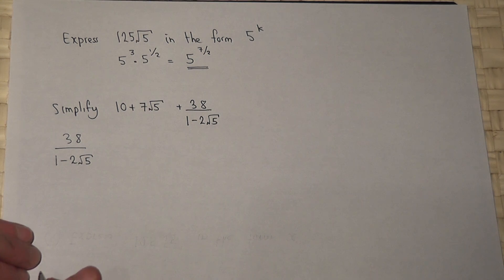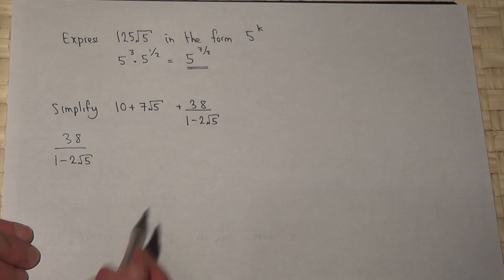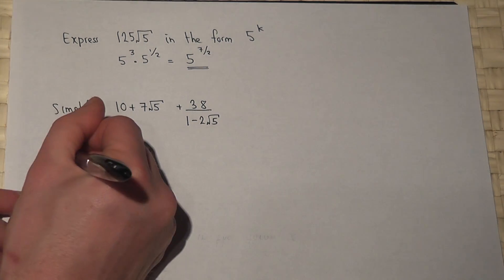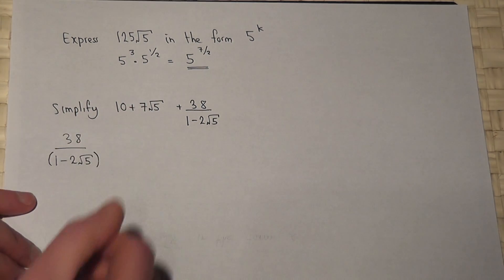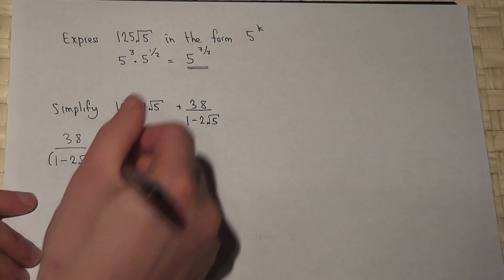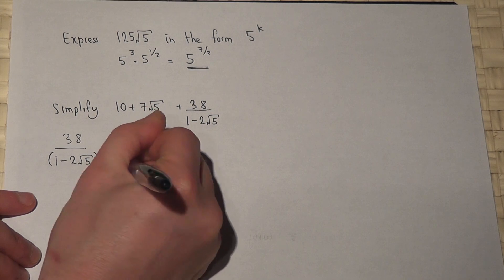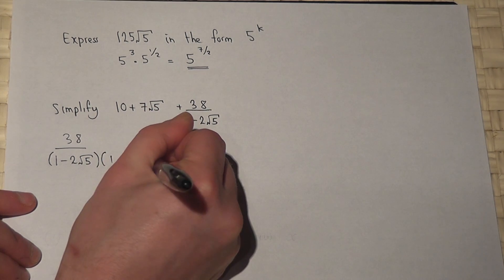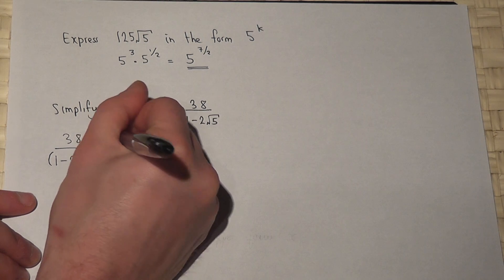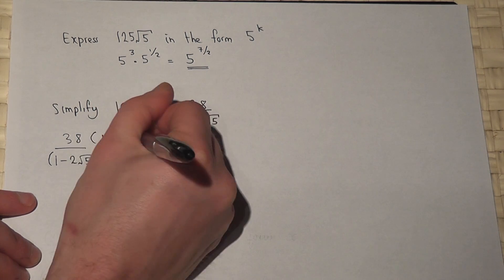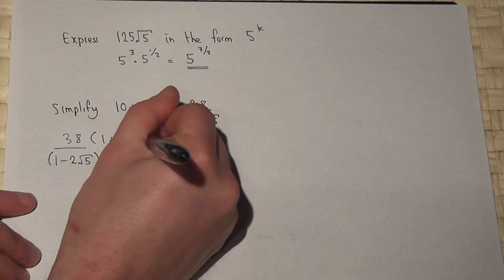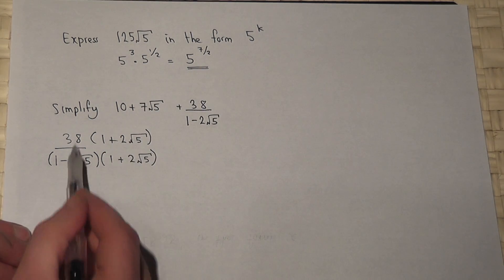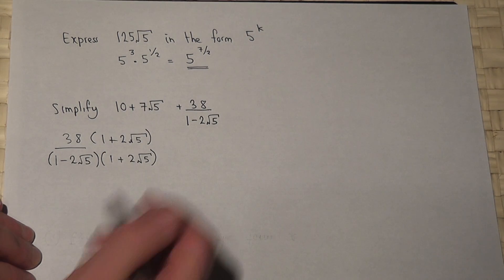We must rationalise this and see what happens. So we multiply the top and bottom by 1 plus 2 root 5. We haven't actually changed the fraction, but as we'll find out, this expression becomes simpler.